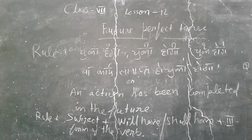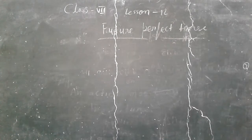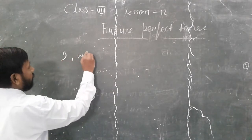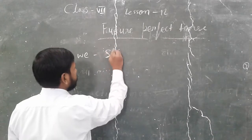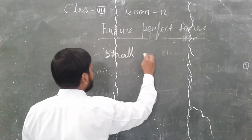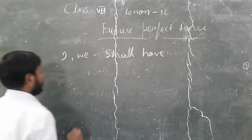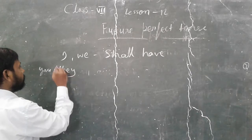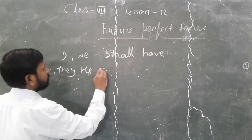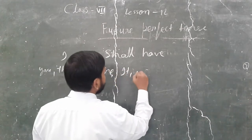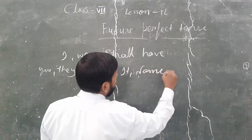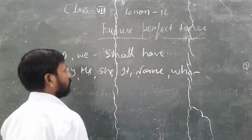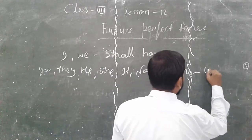Let's see some more examples. For I and we, we use 'shall have.' For the rest — you, they, he, she, it, names, who — we use 'will have.' These are the helping verbs used in Future Perfect Tense.